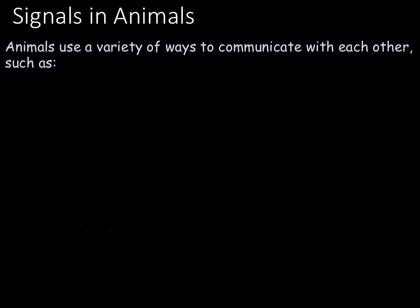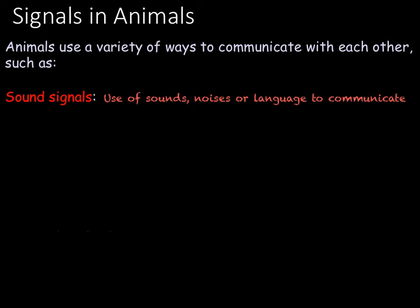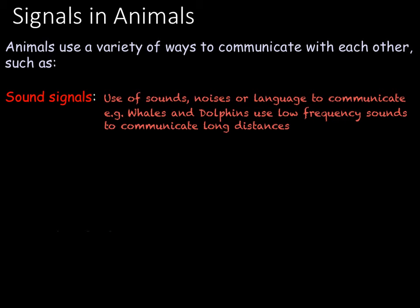Animals can communicate in a variety of ways. The first way you need to know is via sound signals. Communication by sound is pretty common and occurs in humans as well through language. Whales and dolphins communicate using low frequency sounds and clicks as they swim. Domestic cats will use a variety of noises including purring and meowing to communicate not only with each other but also with humans. Birds use a variety of birdsong in order to declare their territory, attract a mate, or warn others about the location of predators.